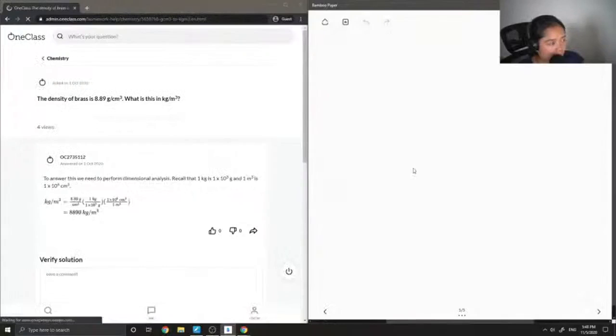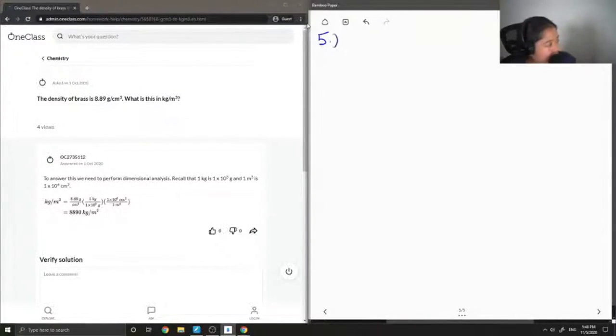All correct, and we can move on to question number five. The density of brass is 8.89 grams per centimeter cubed.